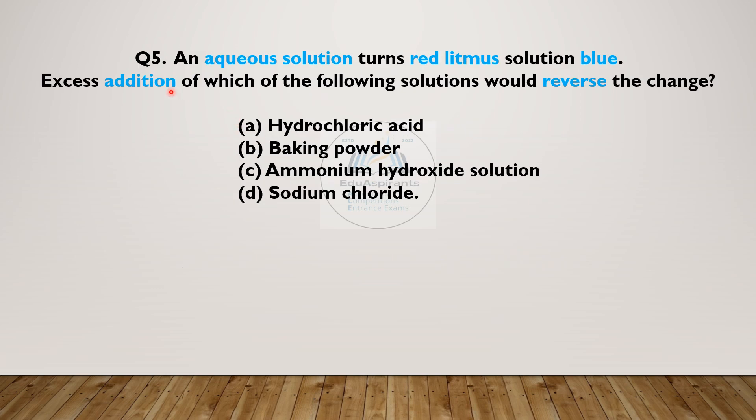Question 5. An aqueous solution turns red litmus solution blue. Excess addition of which of the following solutions would reverse the change? A) Hydrochloric acid, B) Baking powder, C) Ammonium hydroxide solution, or D) Sodium chloride. Let us confirm what you have marked. Answer is A, hydrochloric acid.